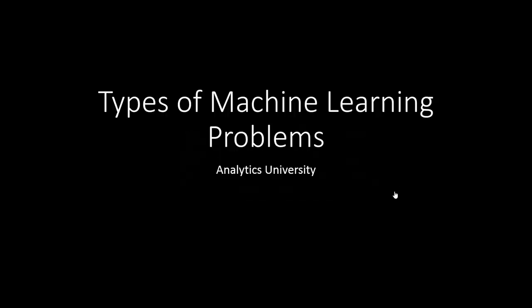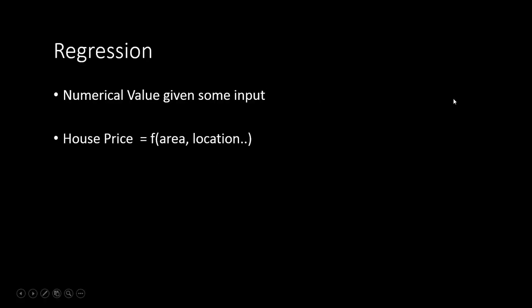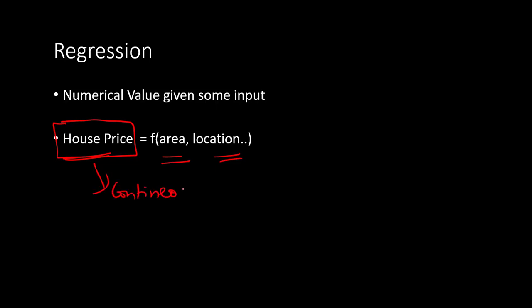In this video I am going to talk about the different broad categories of machine learning problems that you will come across. The first and most popular one is the regression problem. It is very simple: given the input, you have to predict a numerical value. A popular example is predicting the house price given the area and location of the house. The output is numerical and continuous in nature.